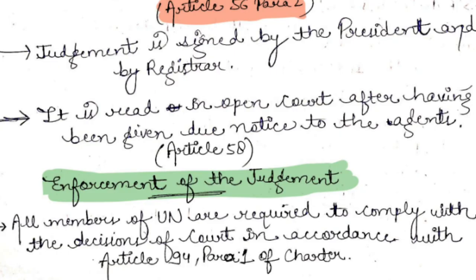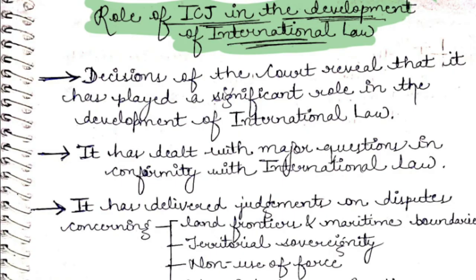Regarding enforcement of judgment: all members of the UN are required to comply with the decisions of the court, in accordance with Article 94.1. Any member of the UN must comply with and follow the court's decisions.